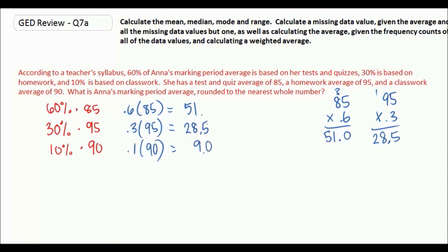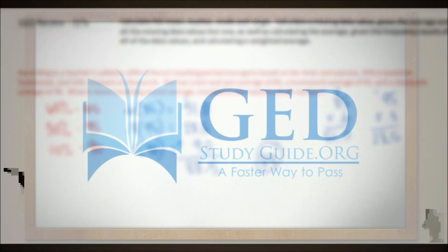We can fill in those missing decimals. So we add and we get 88.5. Rounded to the nearest whole number, Anna's final marking period grade is going to be an 89.